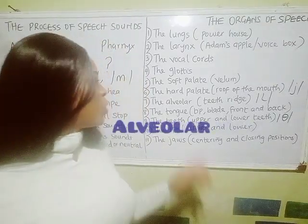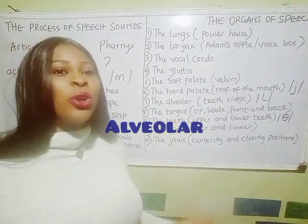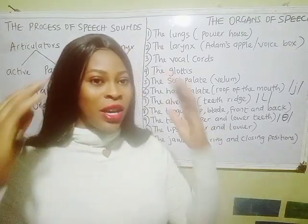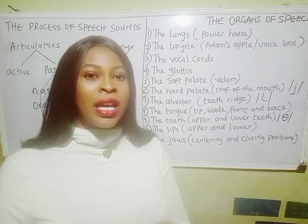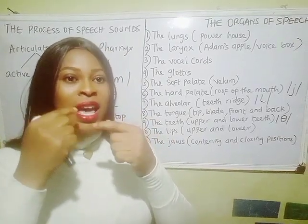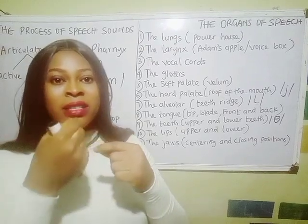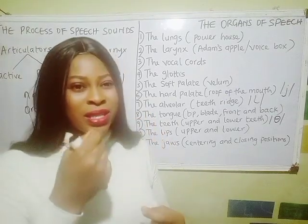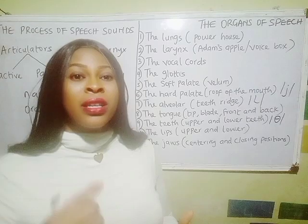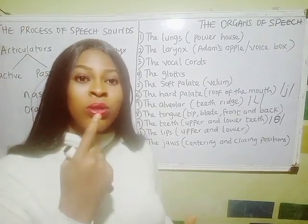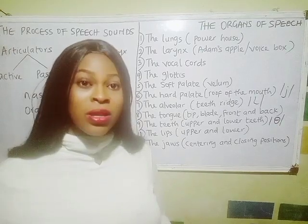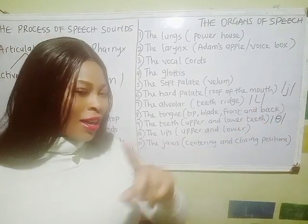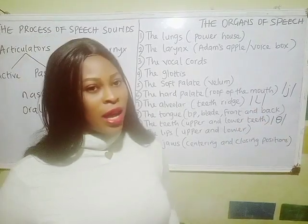The next organ is the alveolar, also called the teeth ridge. The teeth ridge — or alveolar — is located in between the hard palate and the teeth. That's your gum area, where your teeth are attached. We make sounds by using the tip of the tongue raised to the alveolar in order to articulate sounds, producing sounds such as /t/ and /d/. We produce sounds from the alveolar ridge.